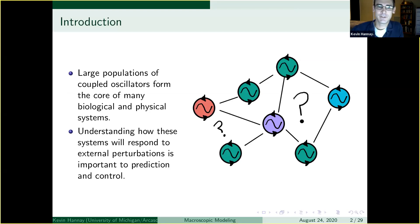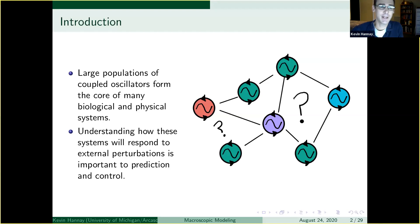Here's the motivation: we've got all of these systems in biology — in particular neural systems, but also the heart and many other biological organs — that we know are made up of a large ensemble of oscillators. Those oscillators may be very complicated in their coupling and detailed dynamics, but we're interested in knowing what happens when you perturb this system and whether we can predict the system response for new perturbations that we haven't necessarily measured yet.